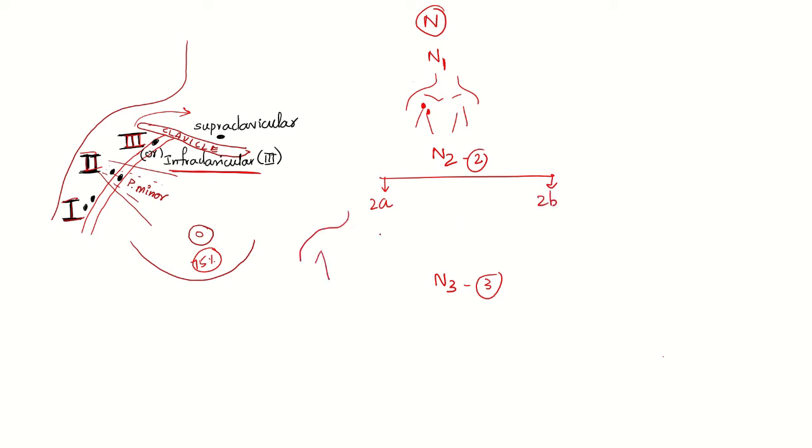Ipsilateral matted lymph nodes are 2a - ipsilateral axillary matted lymph nodes. But remember that it is clearly mentioned in the guidelines that it is only level 1 and level 2. In 2b there is involvement of ipsilateral internal mammary alone, supposing the breast carcinoma is on the right side.